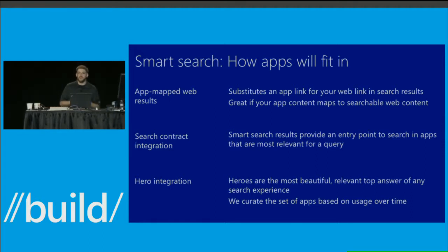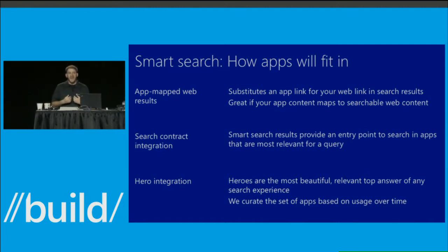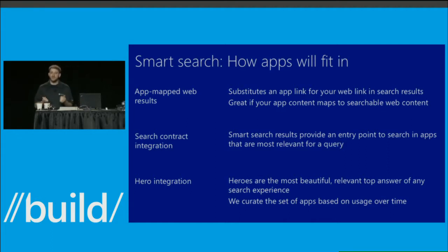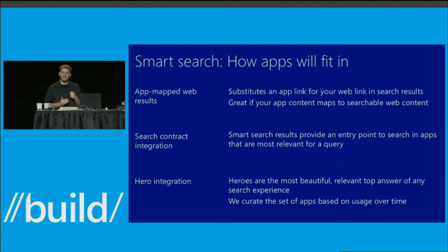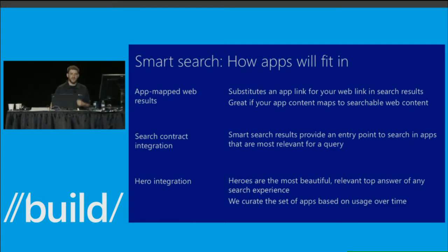The third integration option is hero integration. Heroes are the part of smart search we are most proud of — the absolute most relevant and most beautiful first answer you'll find on any search experience across any platform or the web. If there is an action or piece of information that is core to being the top result for a given query, it's our responsibility to make that integration happen. We'll watch this evolve over the next year as users use smart search.